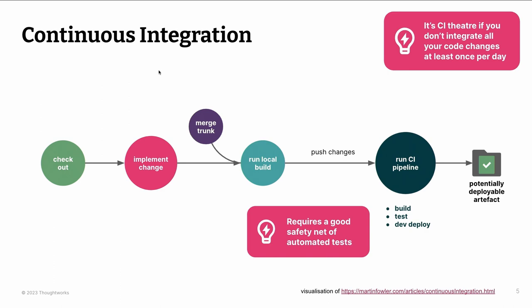Very, very important: if you do not integrate all your code changes at least once a day, what you do is what we call CI theater. It's running some scripts on a CI server, but it's not continuous integration. The core idea of CI is that you integrate all the changes at least once a day. This is what gives you the confidence that your changes still work.